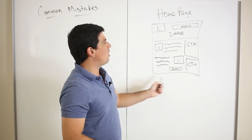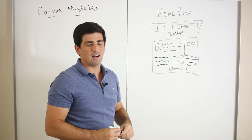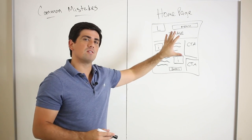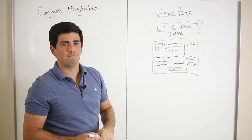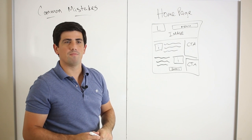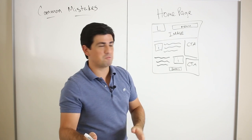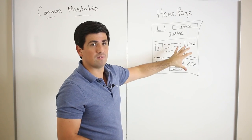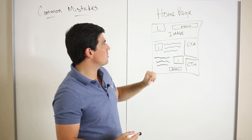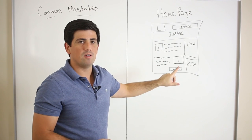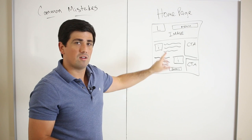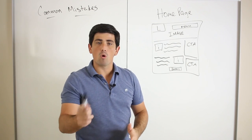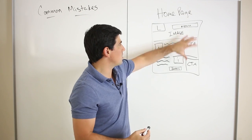If you have a website, I want you to pause this video and go to your site and count up all the different things somebody can click on on your home page — just this one page, how many different things can be clicked on. What if I told you that if you limited those things — made fewer things they could click on — you would actually make more money or get more signups?